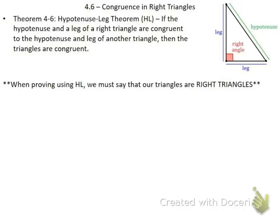Today we'll cover the last way to prove triangles congruent. This method only works with right triangles, and the abbreviation for it is hypotenuse leg. In a right triangle, when the hypotenuse and one of the legs are equal to each other, we can prove the triangles are congruent. Remember, the hypotenuse is always the side across from the right angle — not necessarily the diagonal side if the triangle is rotated.